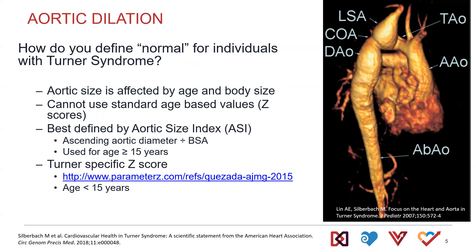The challenge with Turner syndrome is trying to identify the right size for the ascending aorta, given that individuals with Turner syndrome are typically smaller than the general population. The question is how big is too big based on the patient's age and body size, given that those may not fit typical societal norms.